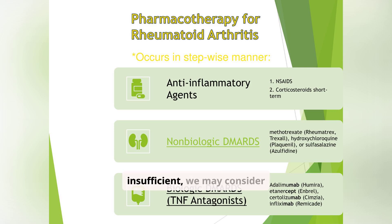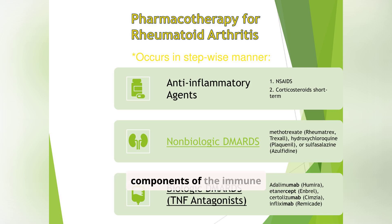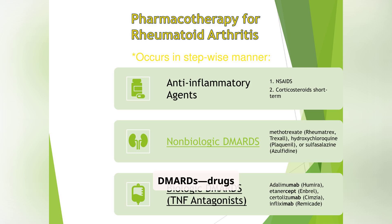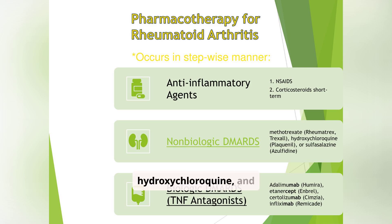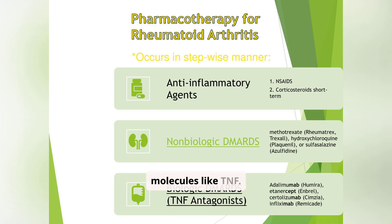If non-biologic DMARDs are insufficient, we may consider biologic DMARDs like TNF antagonists such as adalimumab, etanercept, certolizumab, and infliximab. These target specific components of the immune system. The real workhorses are the DMARDs — drugs that slow disease progression. First up: non-biologic DMARDs like methotrexate, hydroxychloroquine, and sulfasalazine. If these don't work, we call in biologic DMARDs like adalimumab or infliximab, which specifically target inflammatory molecules like TNF.